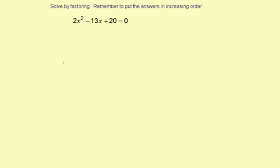Solve by factoring. Remember to put the answers in increasing order. So 2x squared minus 13x plus 20 equals 0.